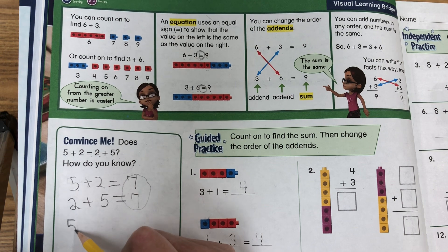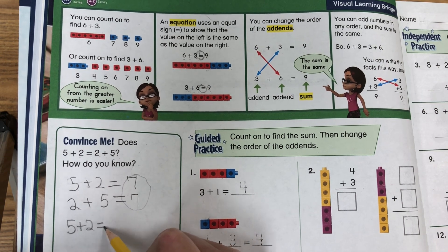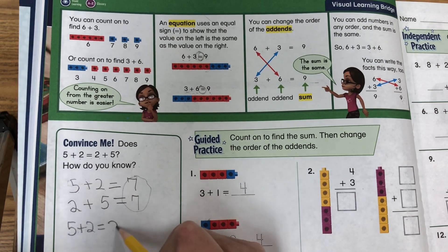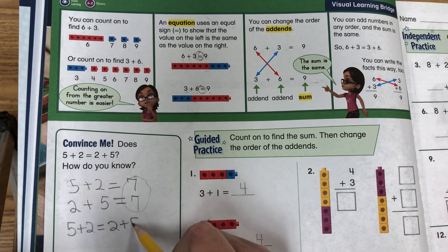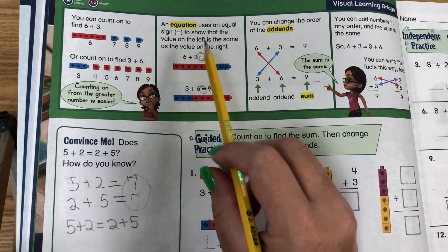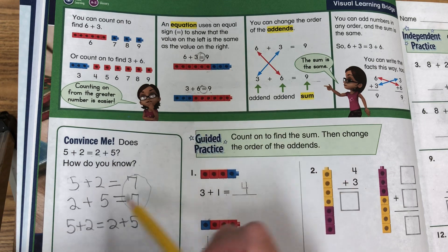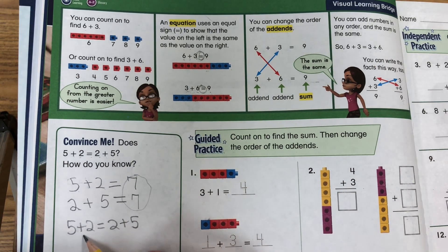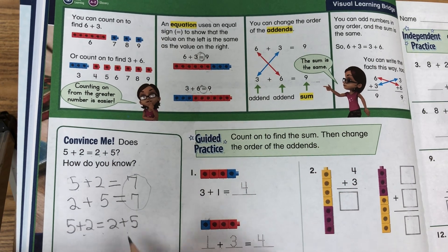5 plus 2 equals 2 plus 5. It's an equation — that means one side is equal to the other side.